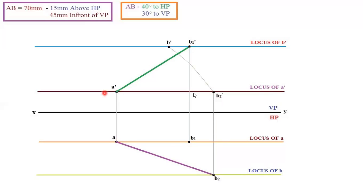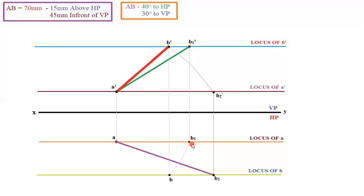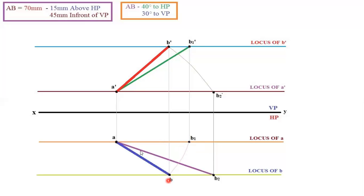Next, take your compass and measure A dash to B2 dash as the radius. Keep the compass center at A dash and rotate it until it touches the locus of B dash. Mark that point and name it B dash. Then join A dash to B dash — this is your front view. Next, keep your compass center at A and measure A to B1 as the radius. Rotate the compass until it touches the locus of B. Mark that point as B. Join A to B — this is your top view.